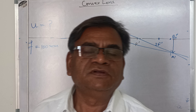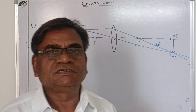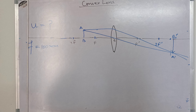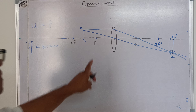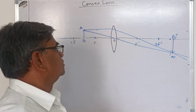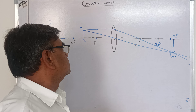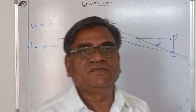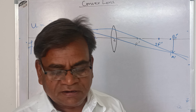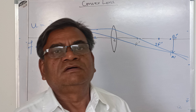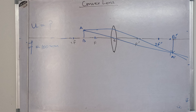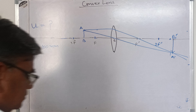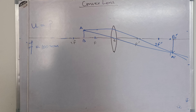Today we discuss the formation of image by a concave lens. In the previous chapters we took some numerical examples regarding image formation by the convex lens. Today we will learn the rules for image formation by a concave lens.